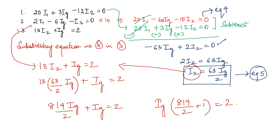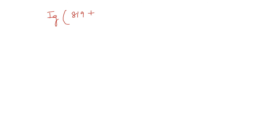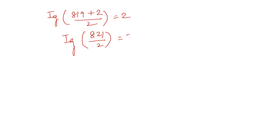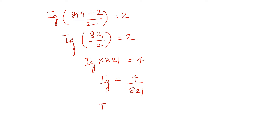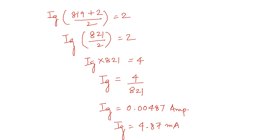Solving: Ig × 821 = 4, therefore Ig = 4 / 821, giving Ig = 0.00487 amperes, which equals 4.87 milliamperes.